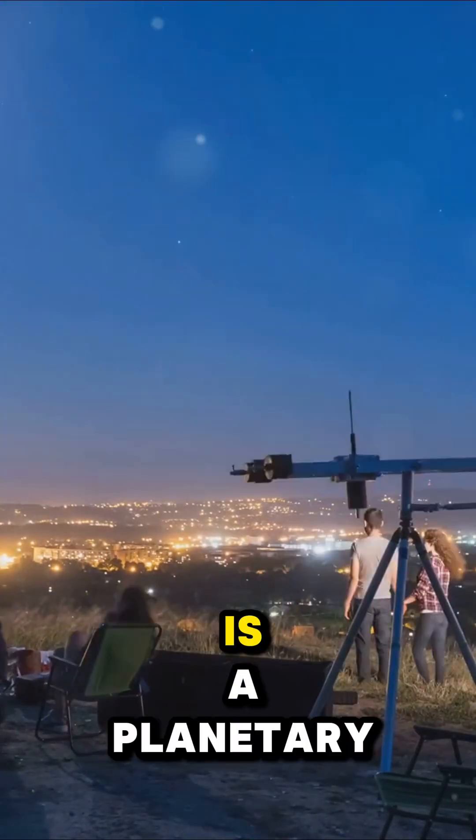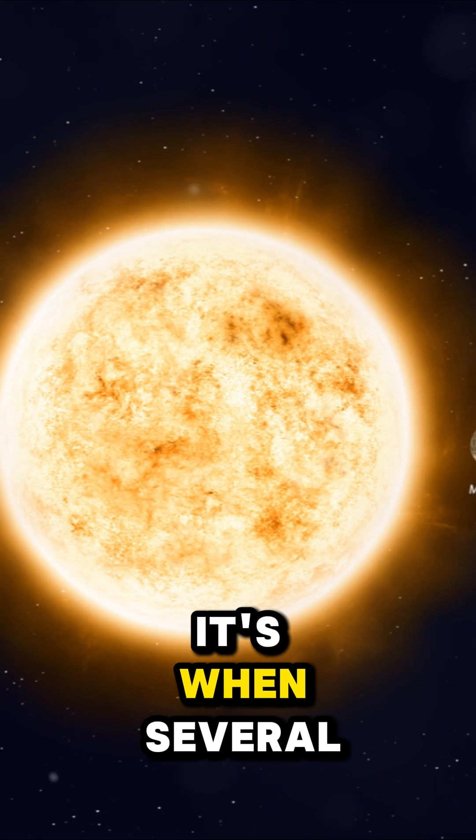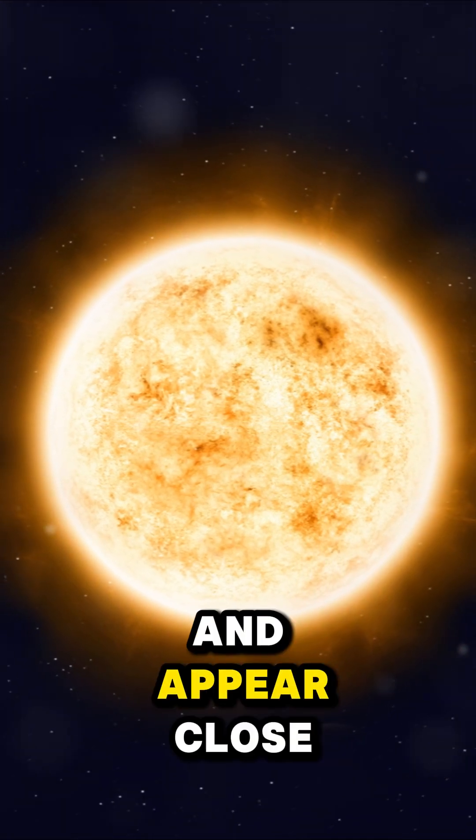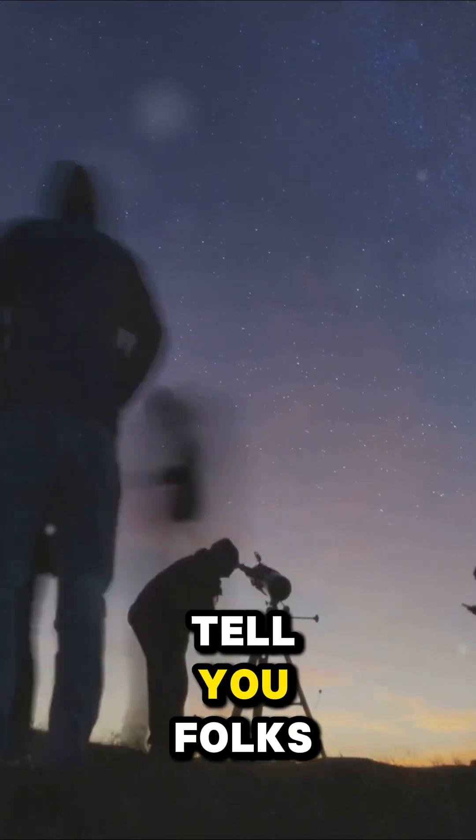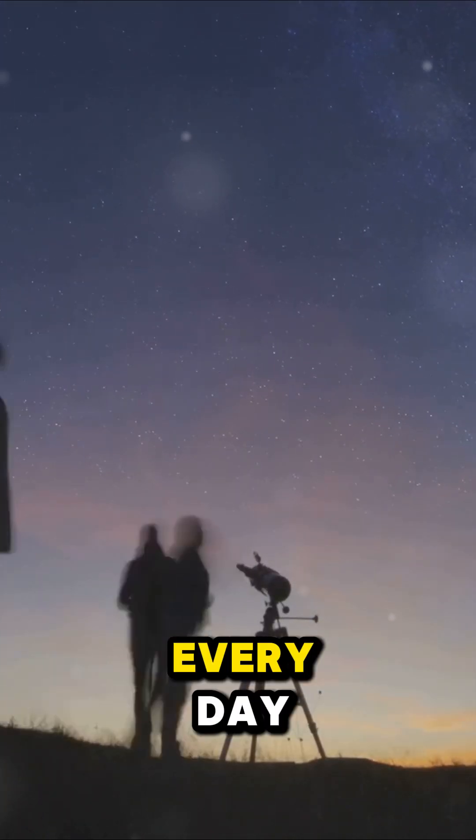So what exactly is a planetary parade? It's when several planets gather on one side of the Sun and appear close together from our viewpoint here on Earth. And let me tell you folks, this doesn't happen every day.